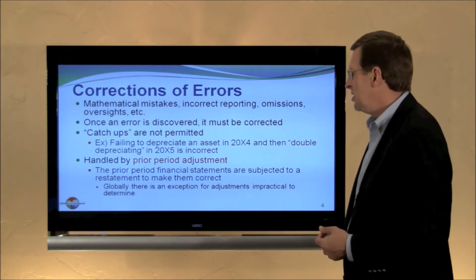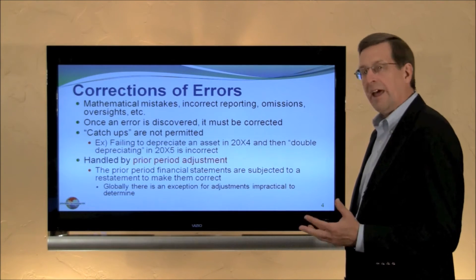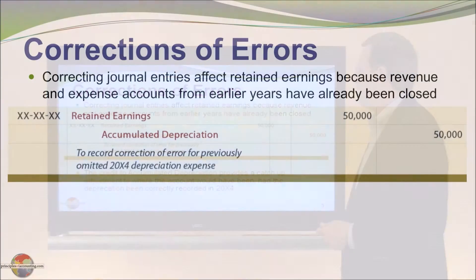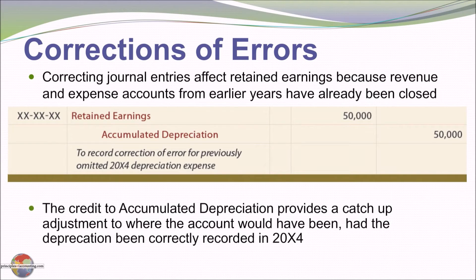Corrections of errors are handled by prior period adjustments — the prior period financial statements are subjected to restatement to make them correct. There is a global exception for adjustments that may be impractical to determine. In a journal entry context, a correcting entry would affect retained earnings because revenue and expense accounts from earlier periods were wrong and had already been closed. So to record depreciation for 20x4 during 20x5, we credit the balance sheet account affected — in this case, accumulated depreciation — and the offsetting debit will be to retained earnings. The credit to accumulated depreciation provides a catch-up adjustment to where the account would have been had depreciation been correctly recorded in the prior year.